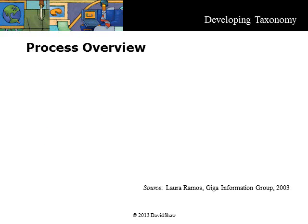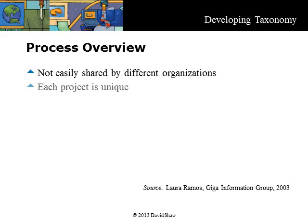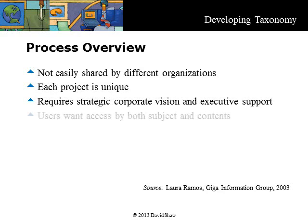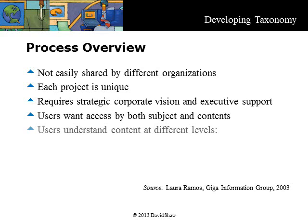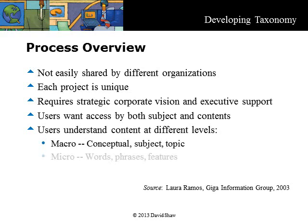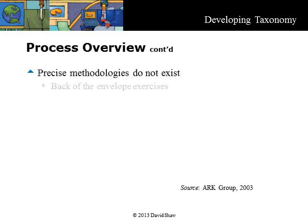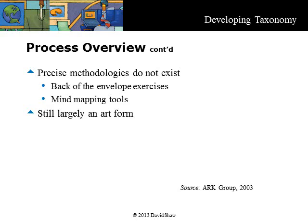There are some things you should know about the process of developing a taxonomy. Laura Ramos of the GIGA Information Group has said that creating a taxonomy is a process that is not easily reproduced across organizations. Each project will be unique and requires strategic corporate vision and executive backing. When developing a taxonomy, planners must recognize that users will want to access information both by subject and its contents, and taxonomies must account for the fact that humans understand contents at both a macro and micro level. The ARC group says that many taxonomies begin as back-of-the-envelope exercises or use simple mind mapping tools. Precise methodologies do not exist, so building a taxonomy is still largely an art form.